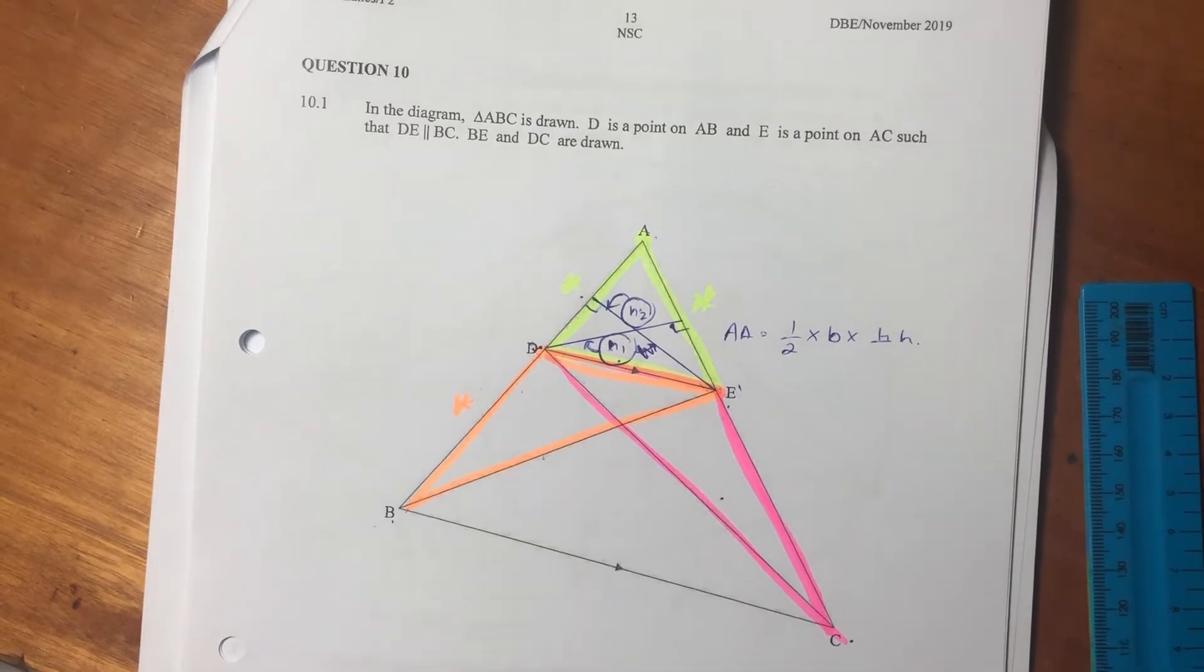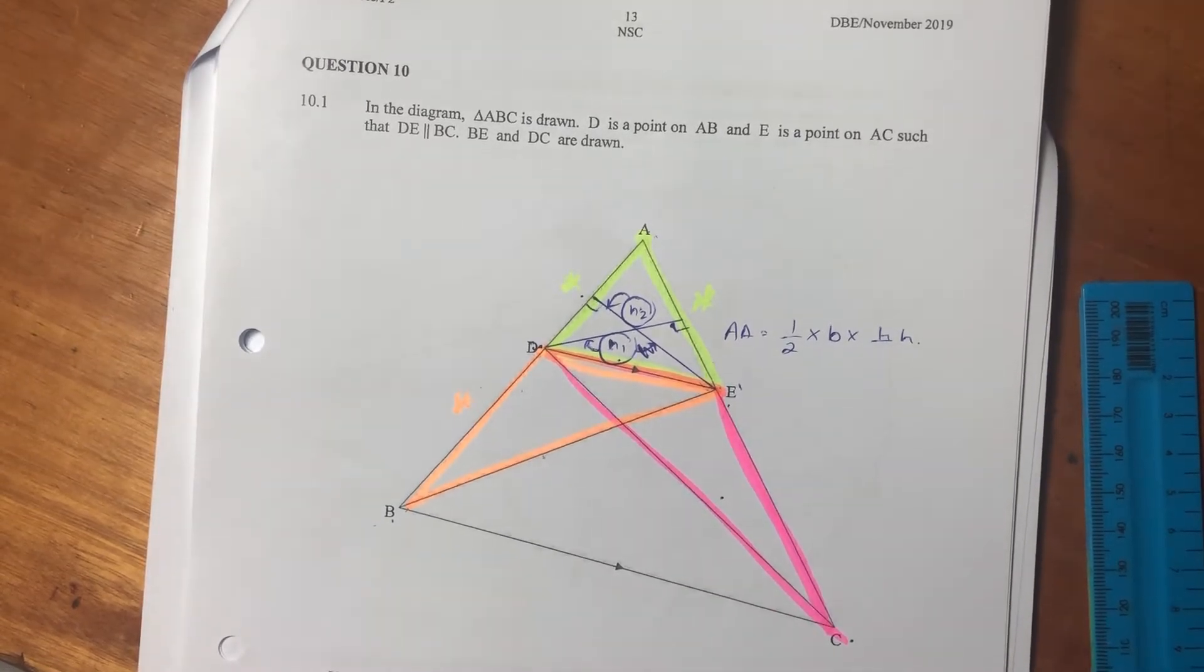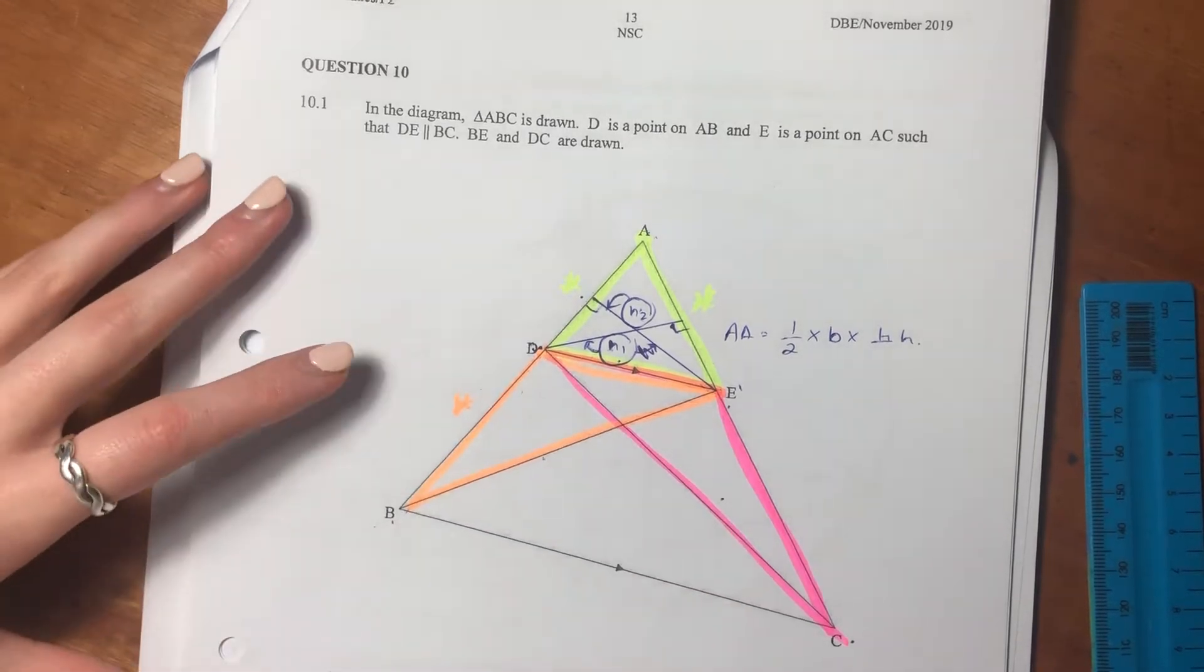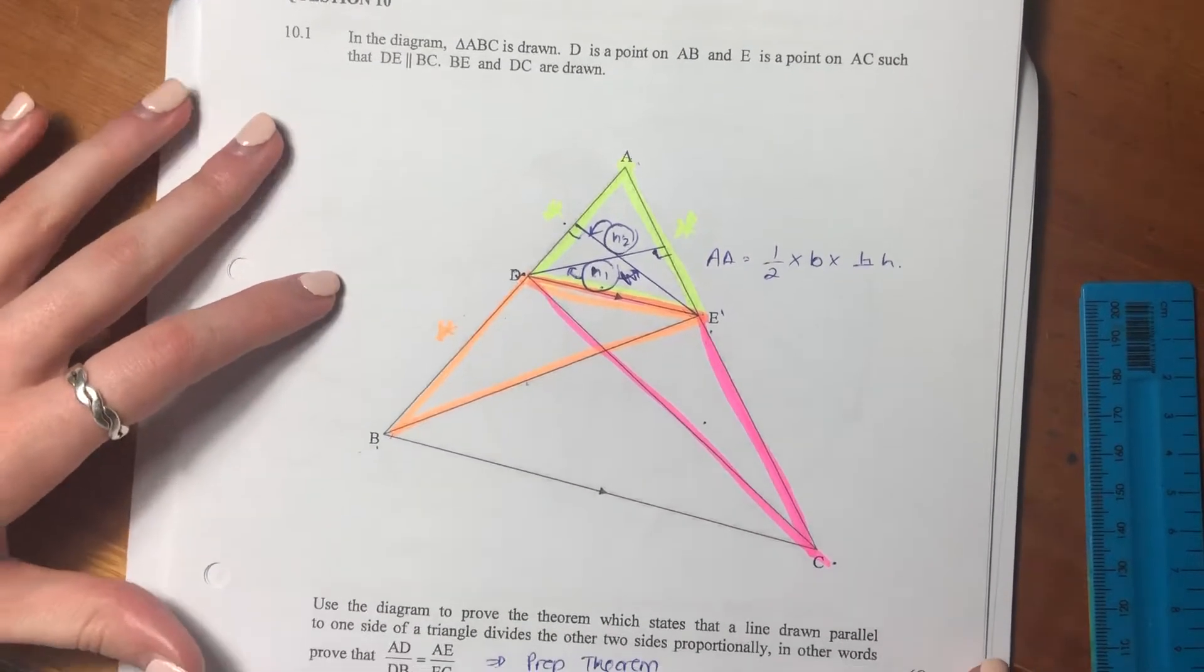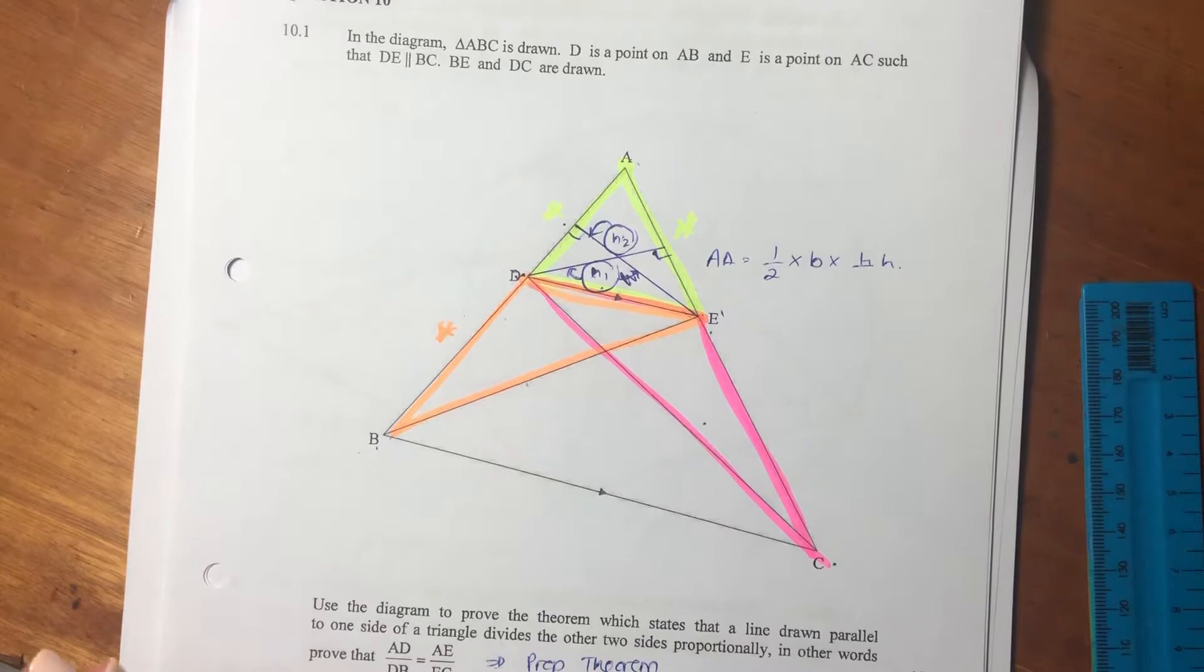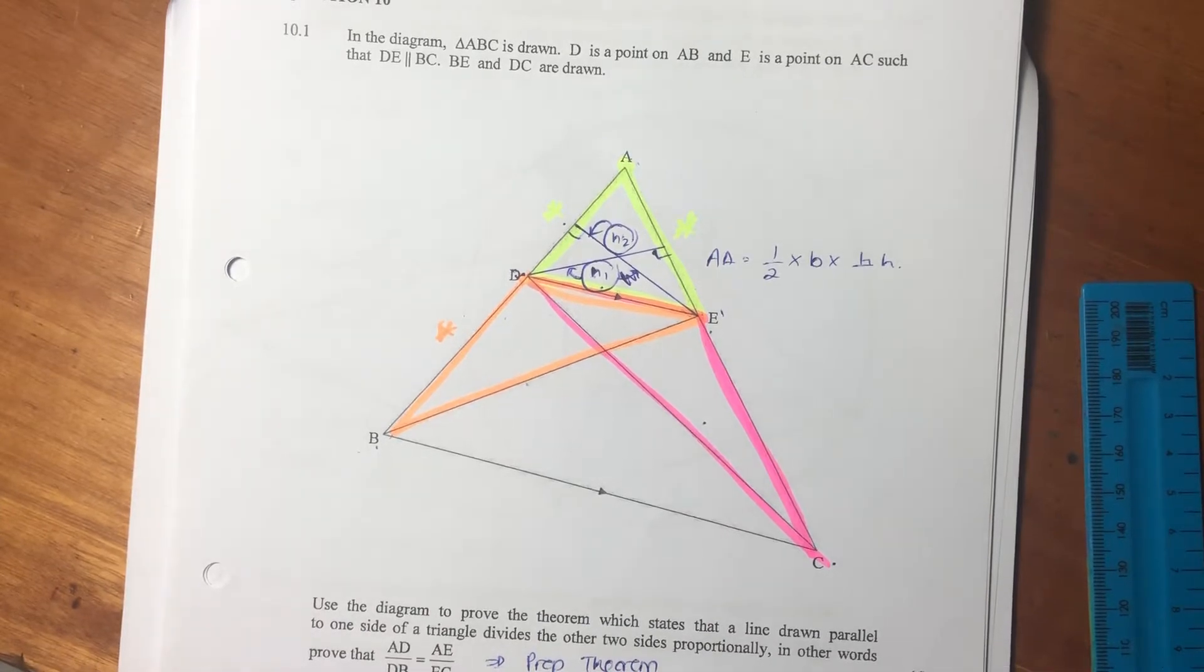Hey guys, so we're moving on to question 10, which is the last question of this exam. Again, we're focusing on geometry, and specifically for this question are going to be looking at the proportionality theorem. So the question says, in the diagram, triangle ABC is drawn.